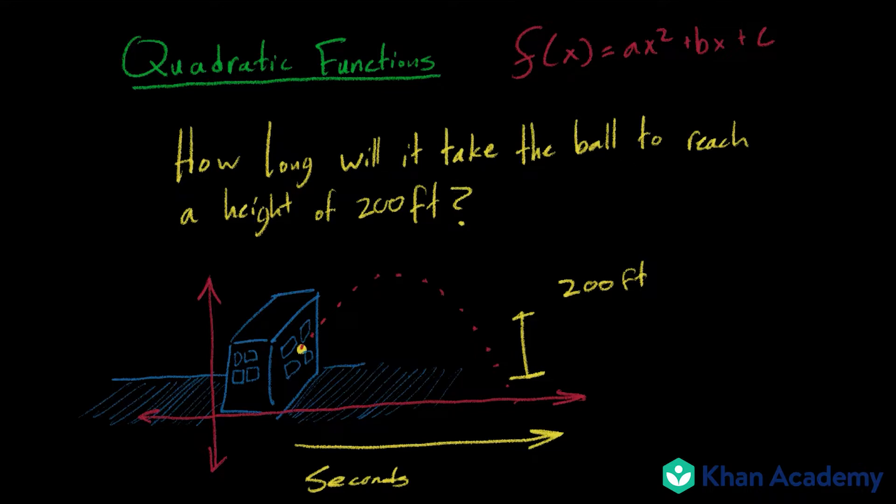And so for this problem we're going to be using the equation h of t, h representing our height, which is given to us, h equals 200. We'll keep note of that. And t representing our time, which is what we're going to be solving for. And so the equation we're going to be working with is h of t equals negative 16 t squared plus 112 t plus 40.